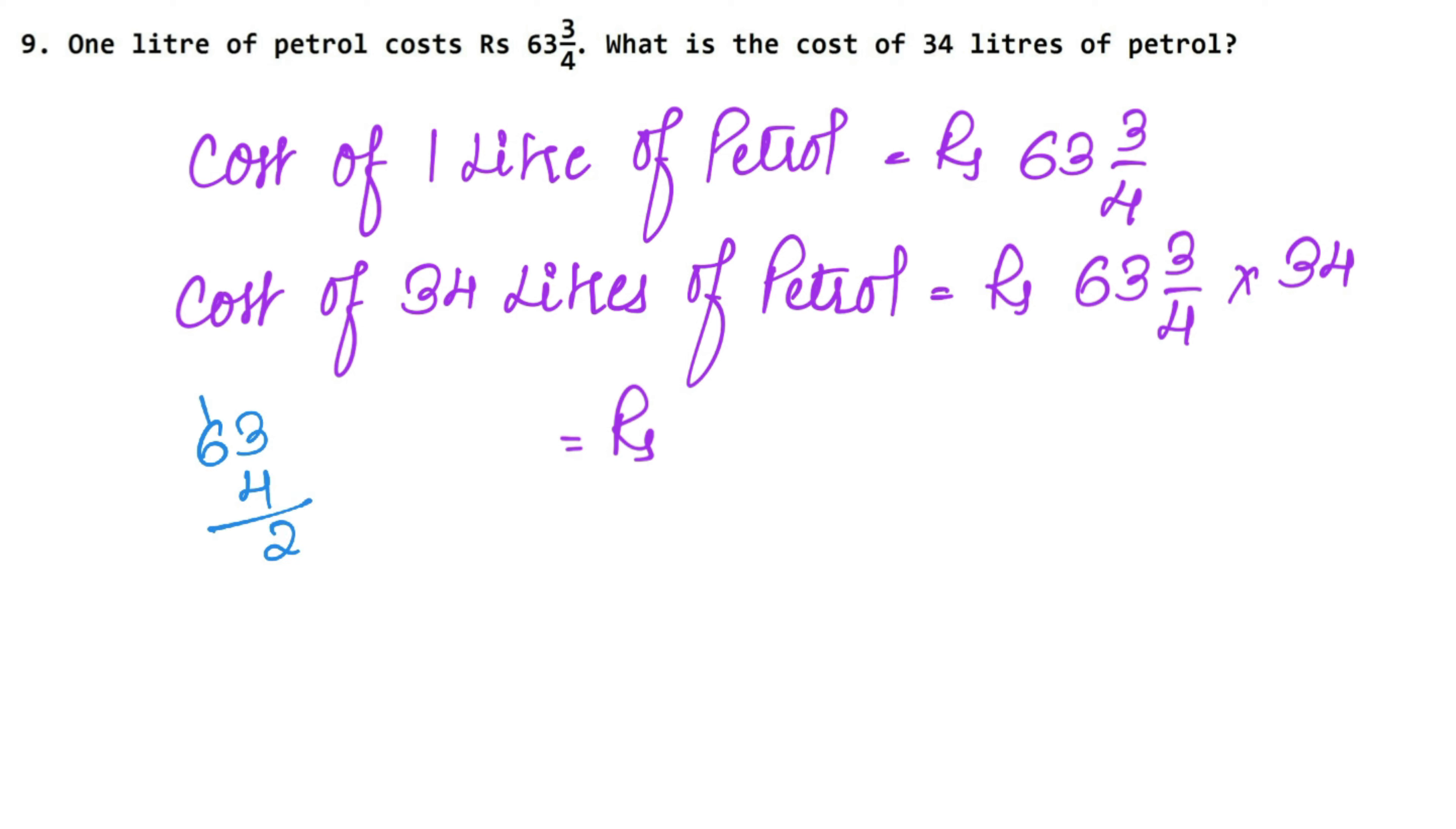So 63 hole 3 upon 4 as it is into 34 liters of petrol. 4, 3 is 12 carry 1. 4, 6 is 24, 25 liters of petrol and plus 3, how much is the cost of 255? So, 255 upon 4 into 34.